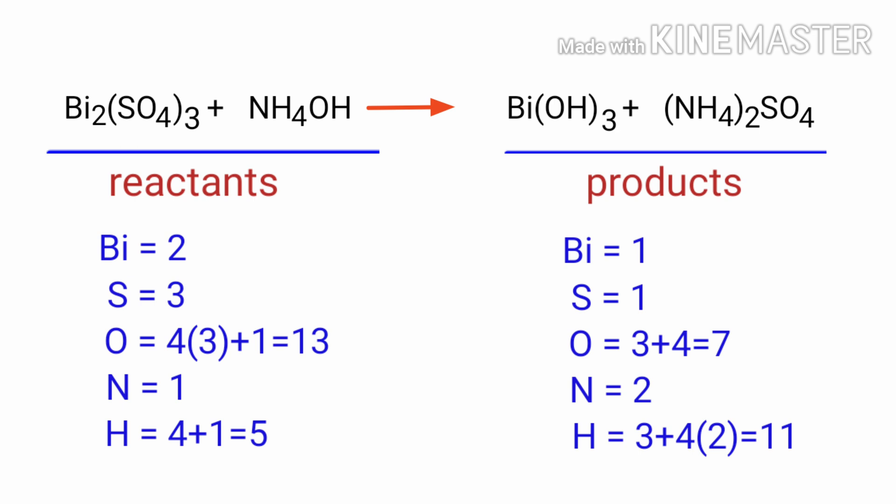If you look at this equation, the equation is not balanced. In the reactants side there are 2 bismuth atoms, 3 sulphur atoms, 13 oxygen atoms, 1 nitrogen atom and 5 hydrogen atoms.